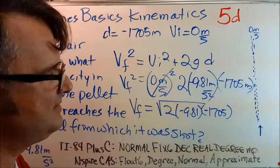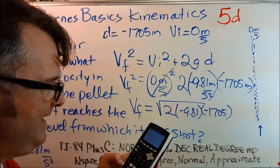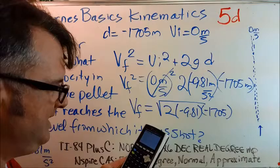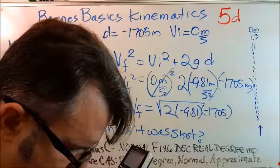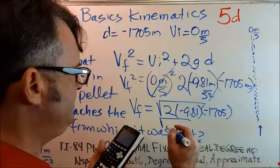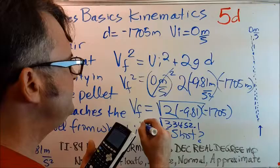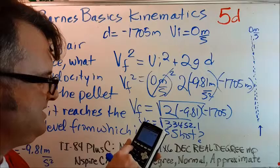Let's put these numbers in first, and then we'll take the square root later. In the TI-84, 2 multiplied by negative 9.81 multiplied by negative 1705. Let's hit enter, and I get 33,452.1 with a bunch of zeros.